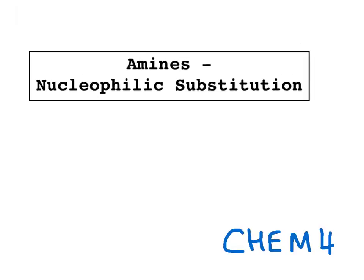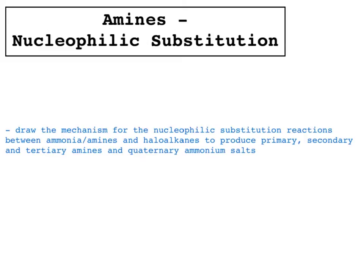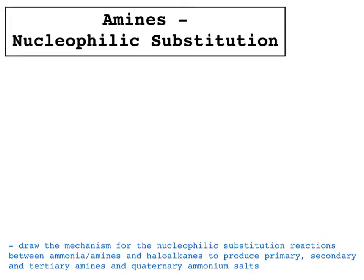This video is on amines and the nucleophilic substitution to create them. Our aim here is to be able to draw the mechanism for nucleophilic substitution reactions between ammonia and amines and haloalkanes to produce primary, secondary and tertiary amines and quaternary ammonium salts. I'm going to draw the mechanism from ammonia all the way to a quaternary salt.